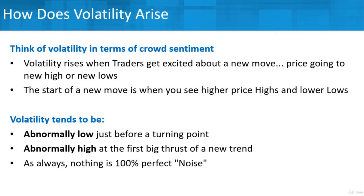Nothing is 100% perfect — there's always noise, false signals and things in the market. But if we're looking at volatility measures and the volatility is low, it might be indicating that there's a turning point coming. And if it's abnormally high, that means people got excited and now the trend is getting more firmly established — the first big thrust of a new trend happening. So volatility is helping us to identify turning points and establish strong trends, two really important things.